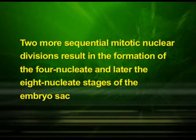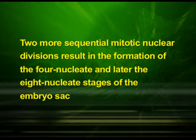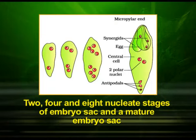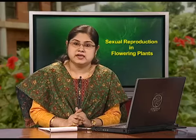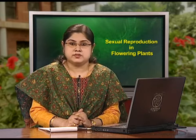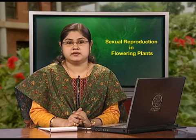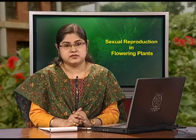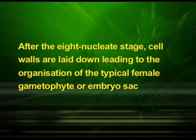Two more sequential mitotic nuclear divisions result in the formation of four-nucleate and later the eight-nucleate stages of the embryo sac. The two-, four-, and eight-nucleate stages and a mature embryo sac can be observed in these diagrams. It is interesting to note that these mitotic divisions are strictly free nuclear, meaning nuclear divisions are not followed immediately by cell wall formation. After the eight-nucleate stage, cell walls are laid down, leading to the organization of the typical female gametophyte or embryo sac.